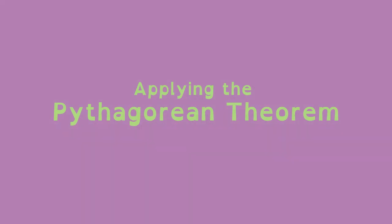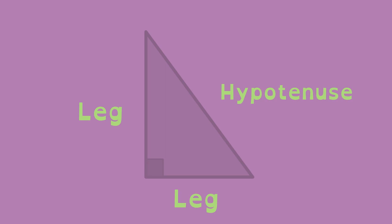Applying the Pythagorean Theorem. The Pythagorean Theorem states that the measure of two legs of a right triangle squared and added together equals the square of the hypotenuse.